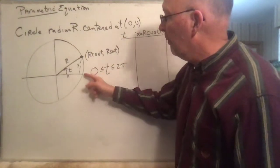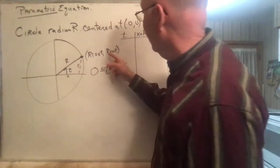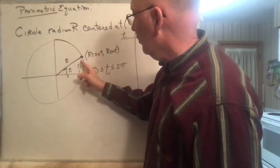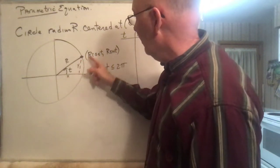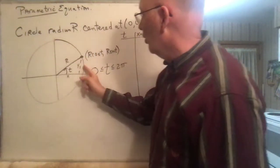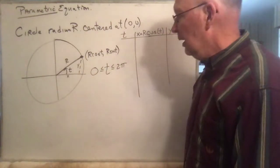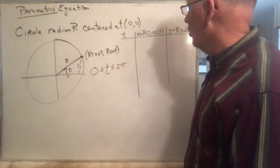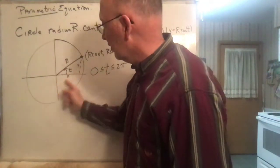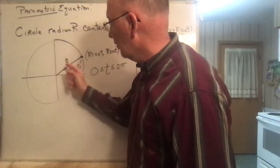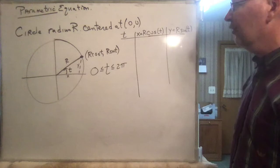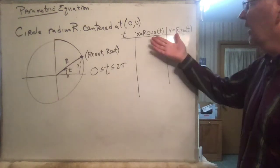As t goes from 0 to 2π, this point goes all the way around the circle. So you get a parameterization — a function that takes you all the way around the circle as t goes from 0 to 2π. If you want to go backwards around the circle, make the sine term negative. If you want to go around twice, let t go from 0 to 4π.